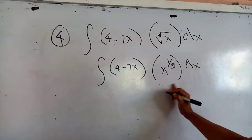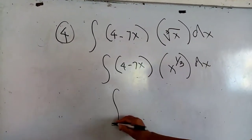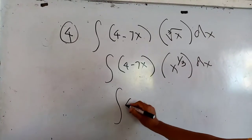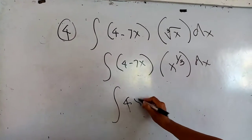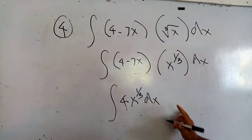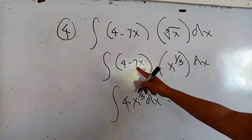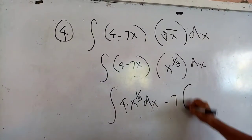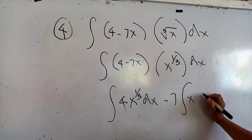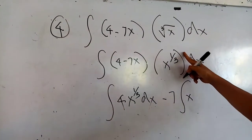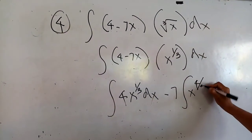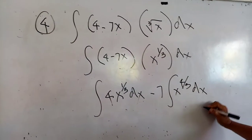When we multiply term by term, I set the integral of 4 times x to the one-third times dx — that will be 4 times x to the one-third, times the differential dx. Then minus 7 — the integral of x times x to the one-third — so 1 plus one-third will be plus 1, giving four-thirds — times the differential dx.